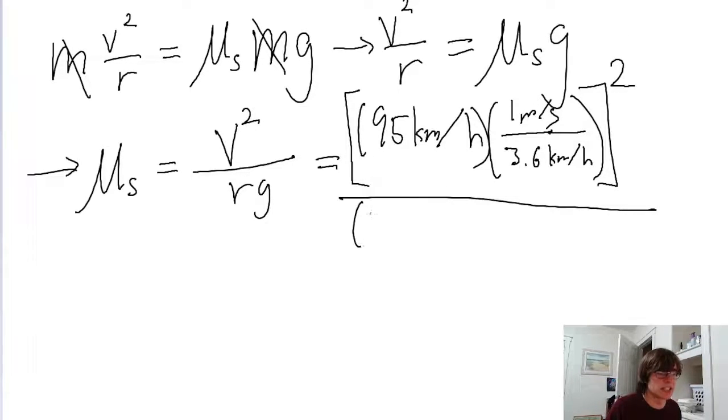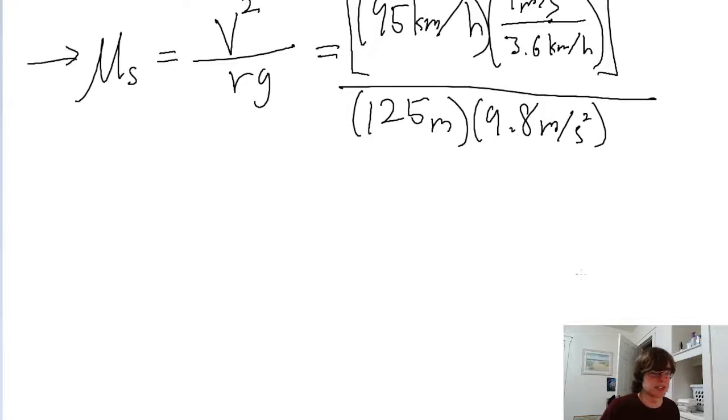And this is being divided by the radius of curvature, which is given as 125 meters. And then we multiply by the gravitational acceleration, which is 9.8 meters per second squared.